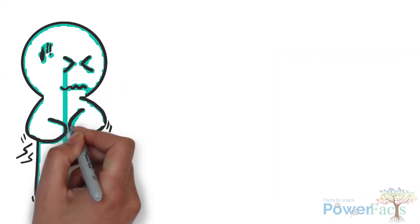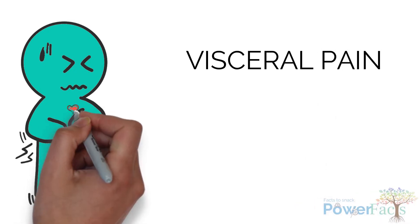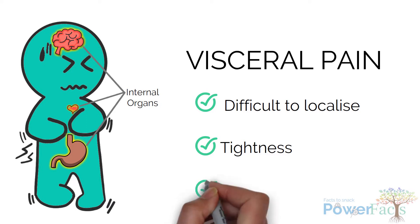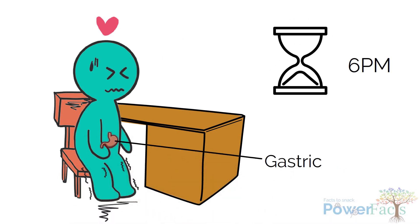There are three types of physical pain. First, there is visceral pain that happens in internal organs. It is difficult to describe and to localize this pain. Patients usually experience a sense of tightness and squeezing sensation. Remember the time when you worked so hard you skipped your meals and you end up having gastric pain? Now that's visceral pain!